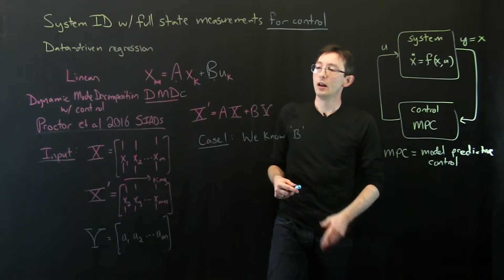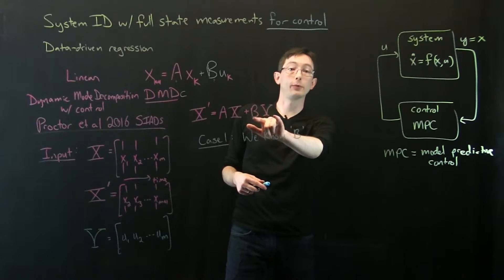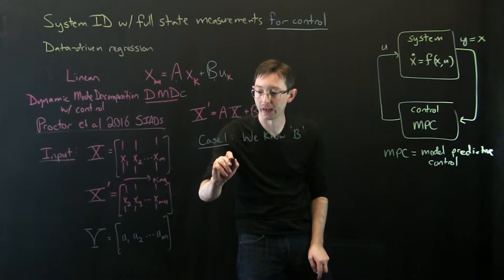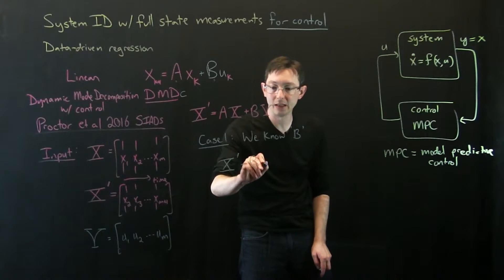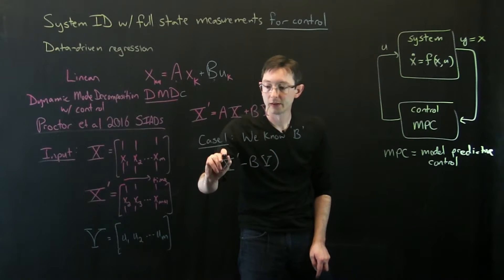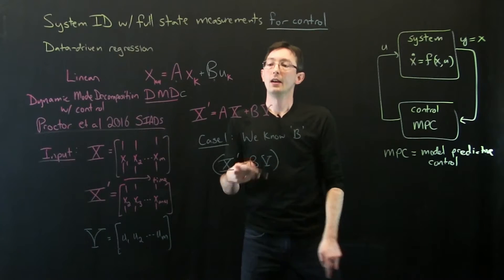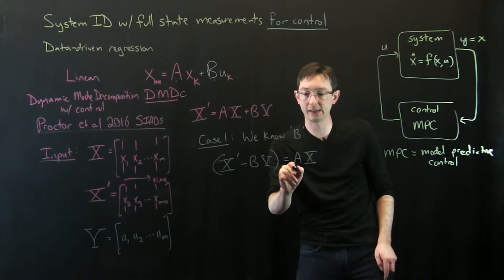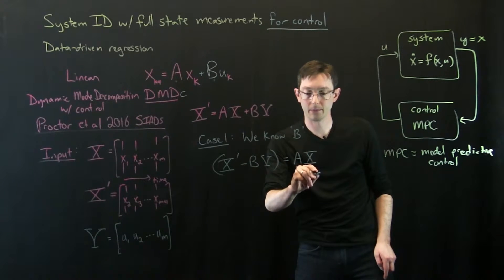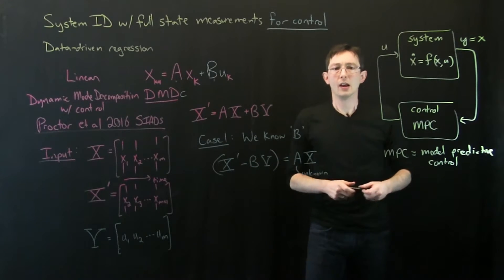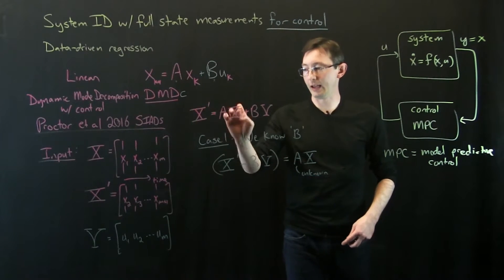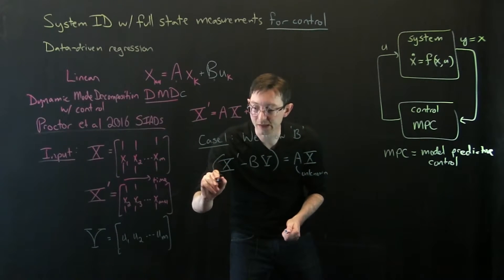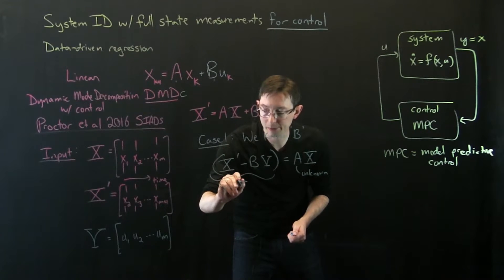If we know the matrix B, essentially what we can do is correct for this known B. We can essentially subtract it off to the left side and we say we have X prime minus B upsilon. So these are all things we can measure. And that equals A times X, where now this is the only unknown.